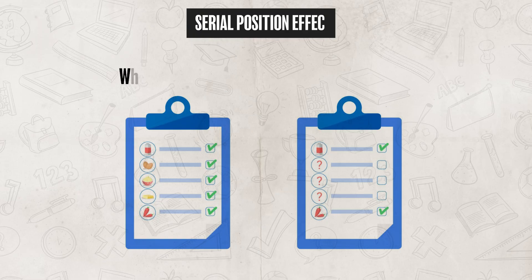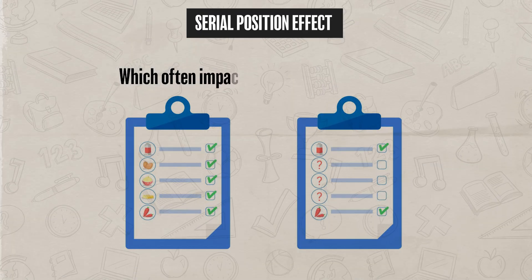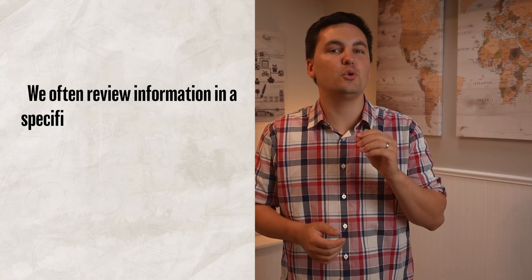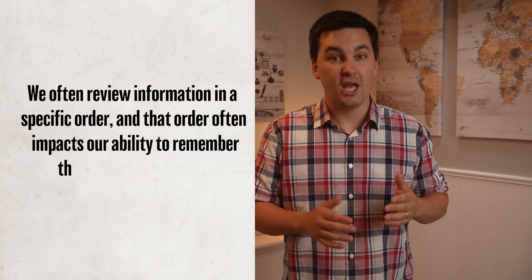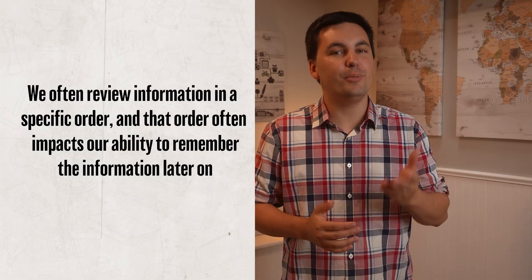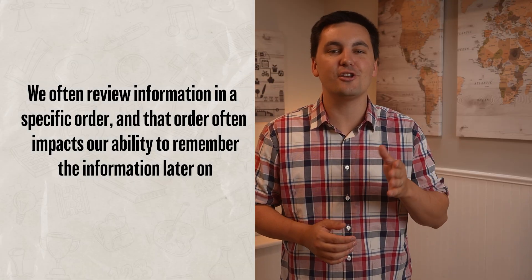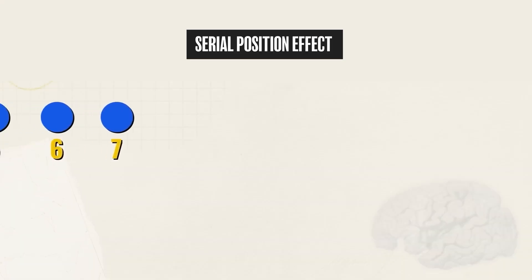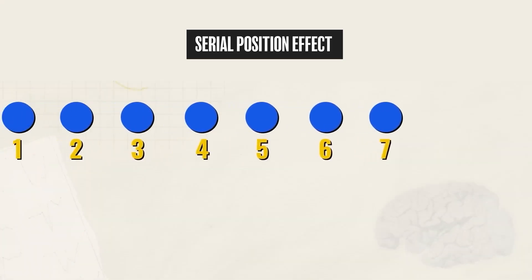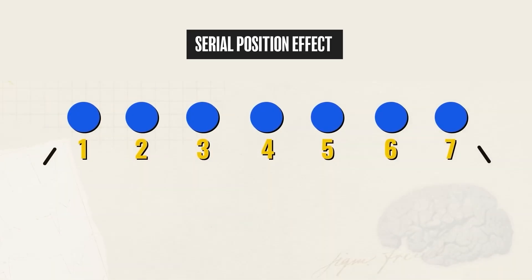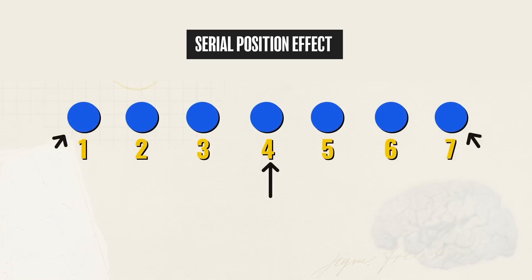Since we're talking about studying, make sure you're on the lookout for the Serial Position Effect, which often impacts the encoding process. When we review information in a specific order, that order impacts our ability to remember it later. The Serial Position Effect suggests that information at the start and end of a list or study session is more likely to be remembered than information in the middle.